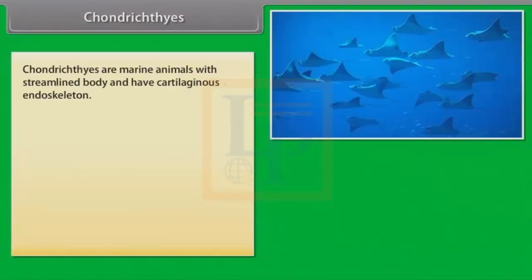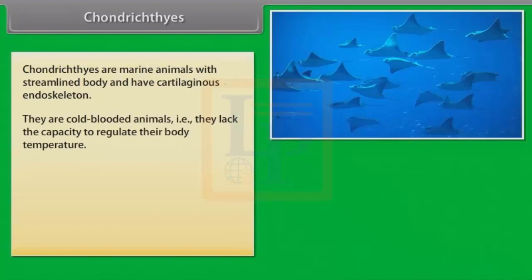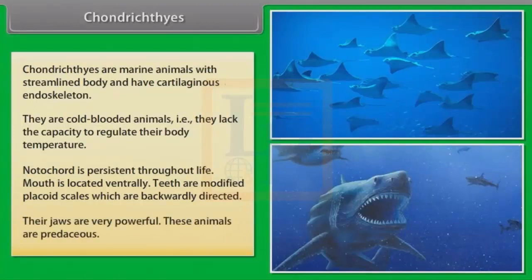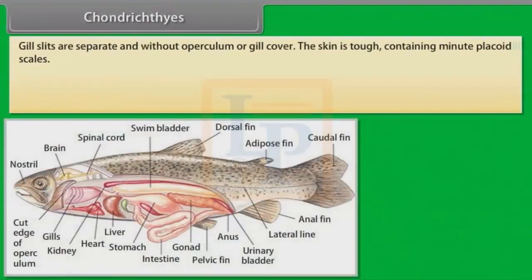Chondrichthyes are marine animals with streamlined body and have cartilaginous endoskeleton. They are cold-blooded animals — that is, they lack the capacity to regulate their body temperature. Notochord is persistent throughout life. Mouth is located ventrally. Teeth are modified placoid scales, which are backwardly directed. Their jaws are very powerful and these animals are predaceous. Gill slits are separate and without operculum or gill cover.